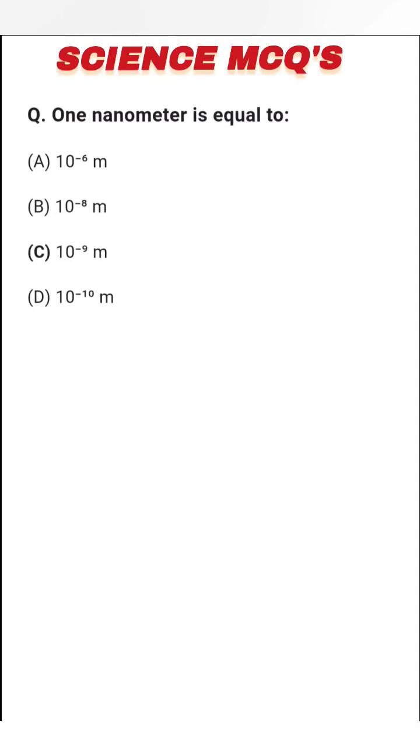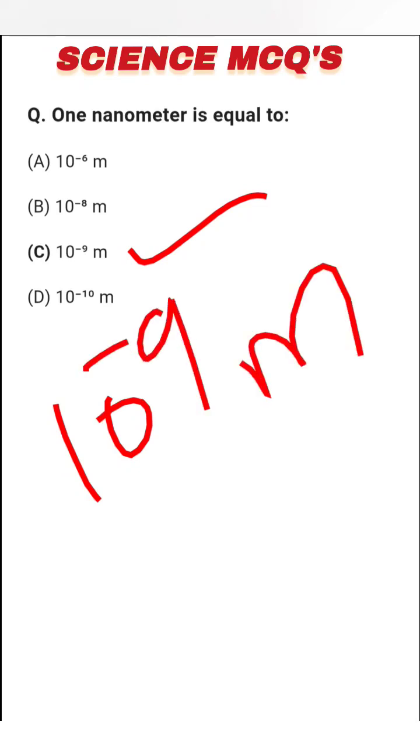So the first question: 1 nanometer is equal to options 10^-6 meter, 10^-8 meter, 10^-9 meter, 10^-10 meter. Here the right answer is option C: 1 nanometer equals 10^-9 meter.